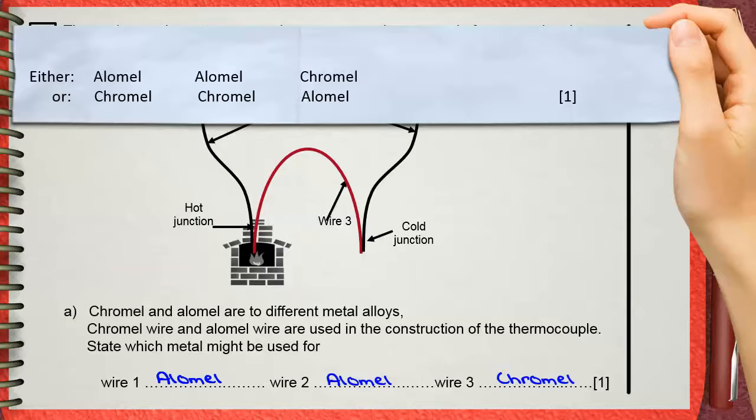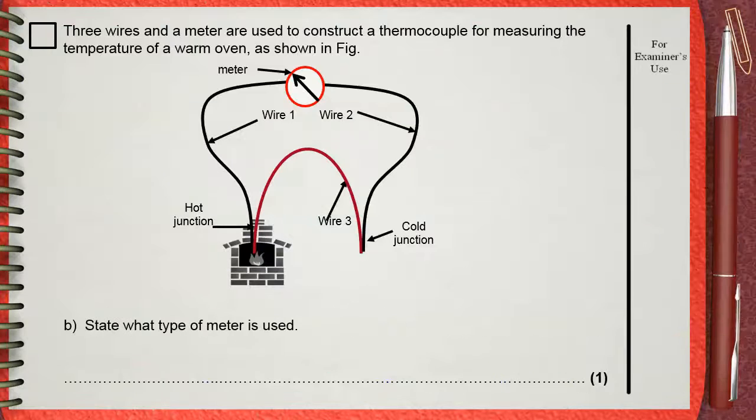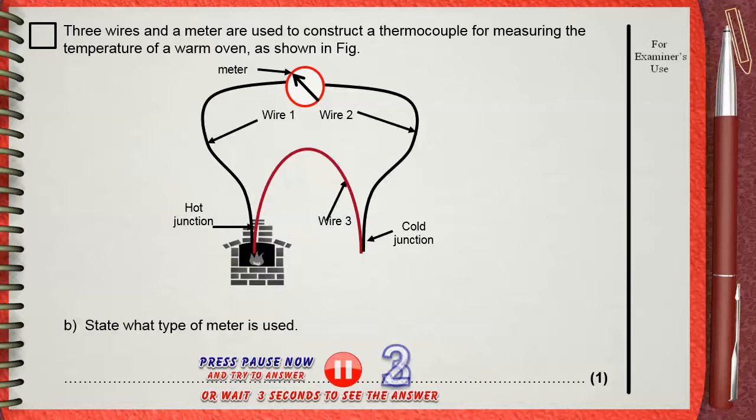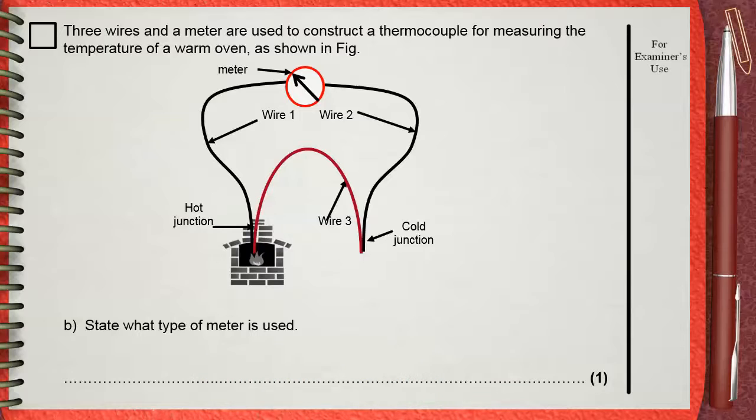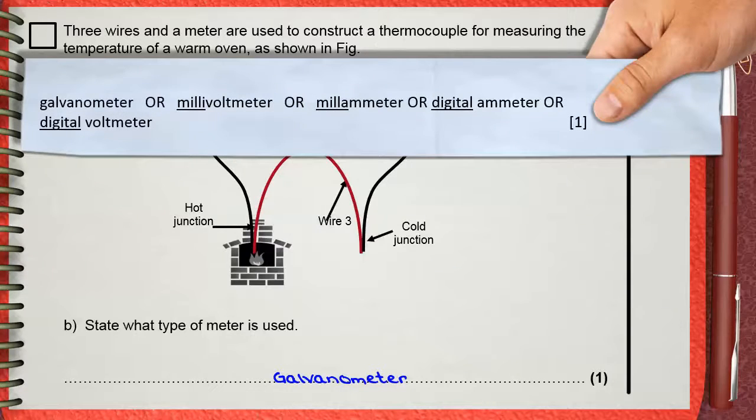The general idea is that wire one and two are the same. Wire three is a different metal.